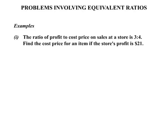Firstly, the ratio of profit to cost price on sales at a store is 3 to 4. We're asked to find the cost price for an item if the store's profit is $21.